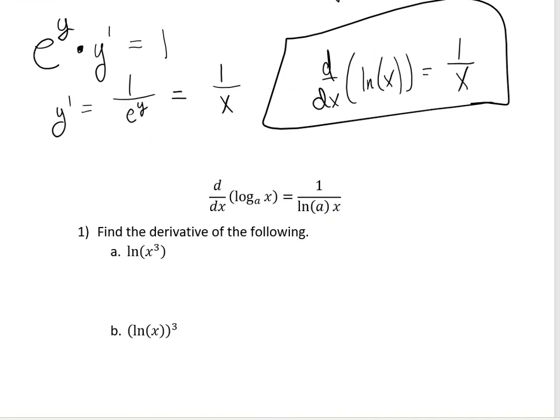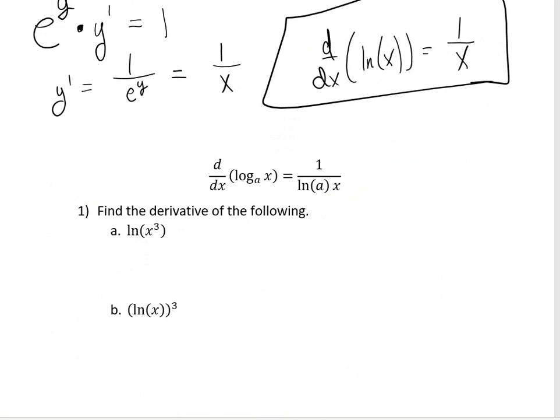Pretty neat! Now if you have a log that's a different base — for example, log base 10 or log base 2, which are very common logs — then the derivative is going to be 1 over the natural log of a, times x.